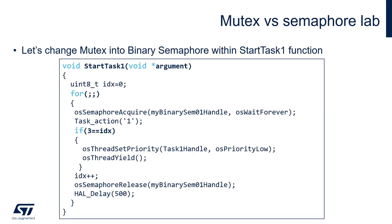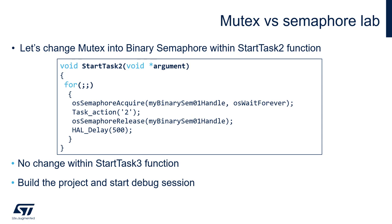Now let's see how the same application behaves if we replace the mutex with a binary semaphore. The only modifications needed are within StartTask1 and StartTask2 functions: replace OSMutexAcquire with OSSemaphoreAcquire, and OSMutexRelease with OSSemaphoreRelease. The same changes apply within StartTask2. There is no change within StartTask3. After all modifications, please build the project, start a debug session, run the SWV ITM Viewer, and run the code.